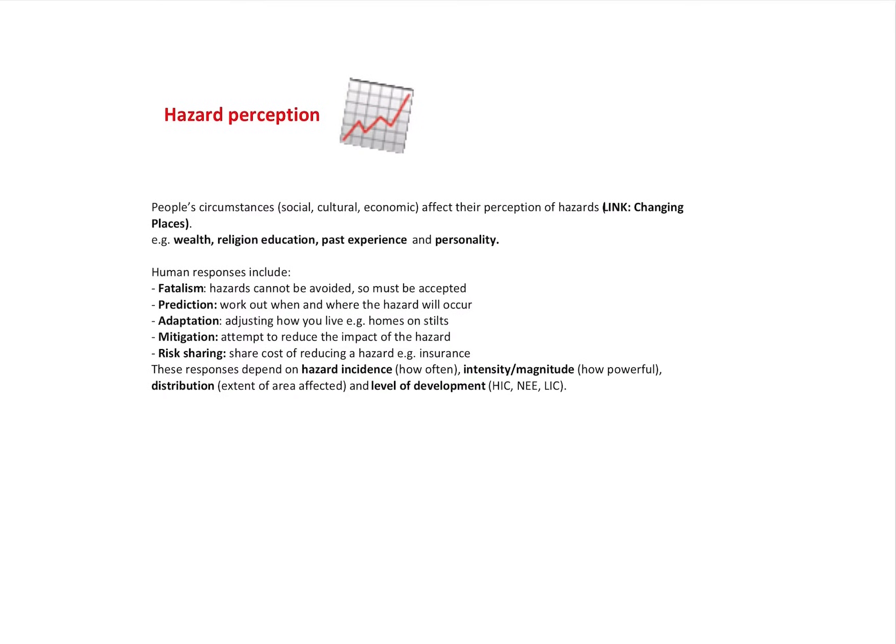And so that leads us quite nicely on to hazard perception. Hazard perception is people's circumstances affecting their perception of hazards. You might link that to changing places. In changing places we talk quite a lot about perceptions of things, and that same sort of thought applies to hazards.